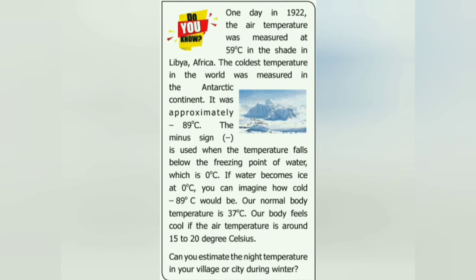One day in 1922, the air temperature was measured at 59 degrees Celsius in the shade in Libya, Africa. The coldest temperature in the world was measured in the Antarctic continent — it was approximately minus 89 degrees Celsius. The minus sign is used when the temperature falls below the freezing point of water, which is zero degrees Celsius. Normal body temperature is 37 degrees Celsius. A body feels cool if the air temperature is around 15 to 20 degrees Celsius.